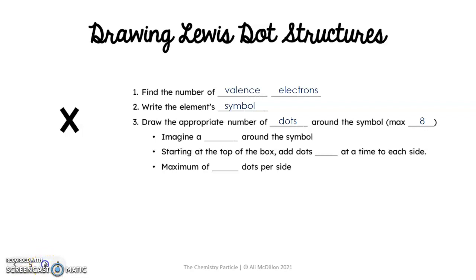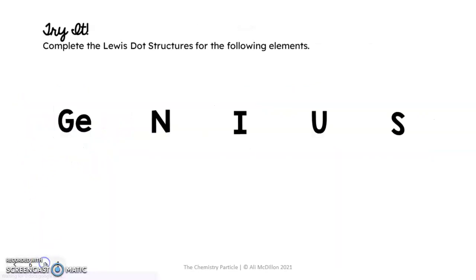We're going to imagine a box around the symbol. Starting at the top of the box, you're going to add dots one at a time to each side with a maximum of 2 dots per side. When you start drawing these structures, you want to do it just like with your Bohr model. So you'll go 1, 2, 3, 4. You want to fill around the box first, and then come back and do 5, 6, 7, and 8.